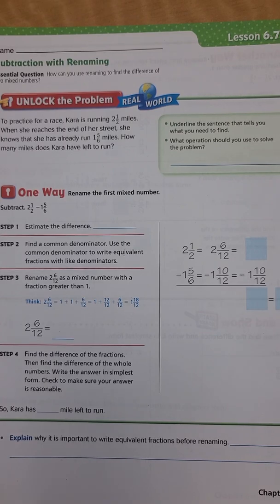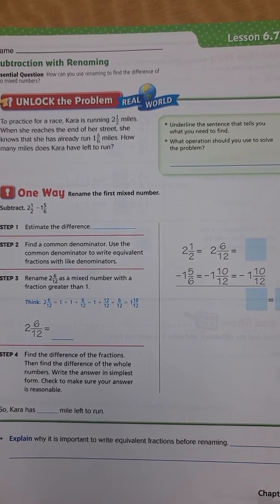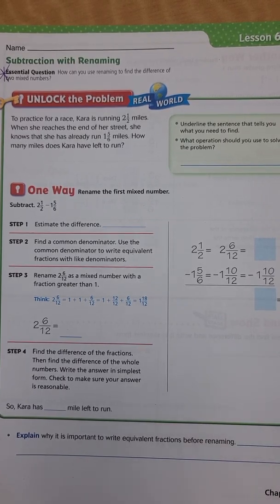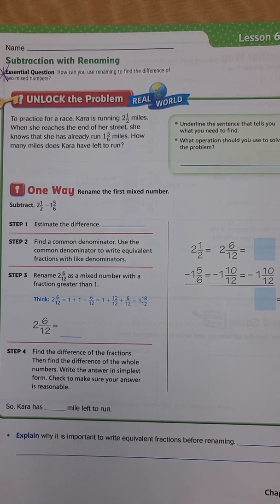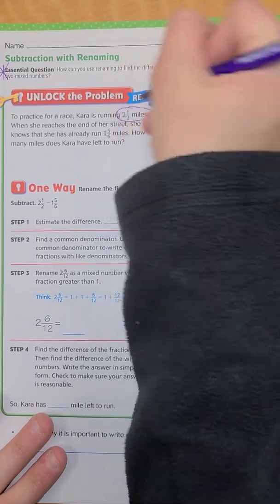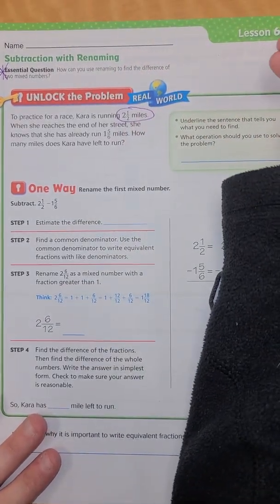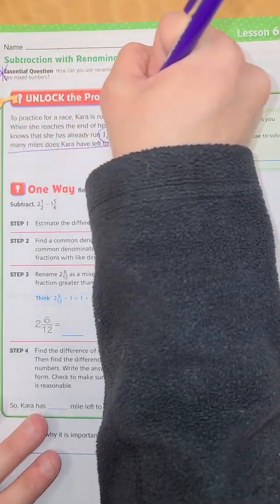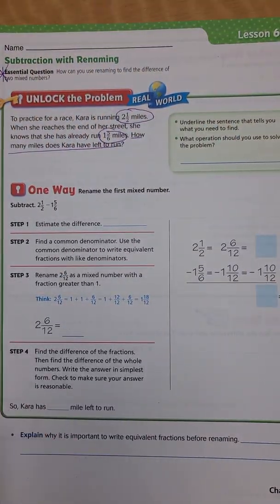So this is something a little bit different. It says: to practice for a race, Kara is running two and a half miles. When she reaches the end of her street, she knows that she has already run one and five-sixths miles. How many miles does Kara have left to run? So we have two and a half miles as her total, and she's already run one and five-sixths. That's what we're trying to figure out.